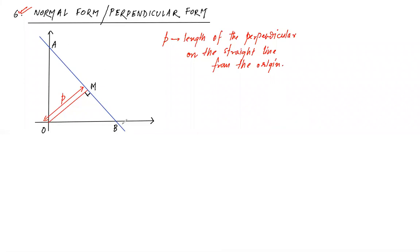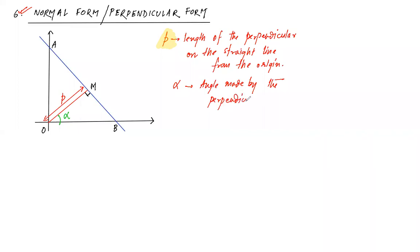We know we want two parameters; so far we have one — the length p. The second parameter is the angle alpha that the perpendicular OM makes with the positive x-axis. That angle is called alpha. Once again, we wanted two parameters for the equation of a straight line and now both are ready: p (the perpendicular distance) and alpha (the angle with the positive x-axis).